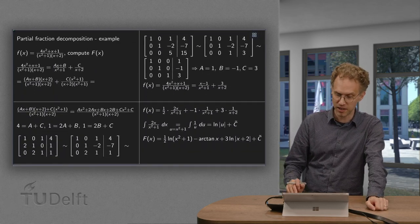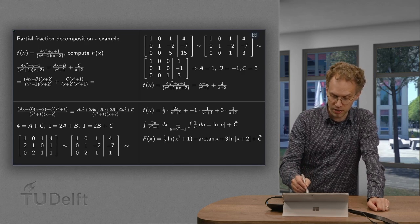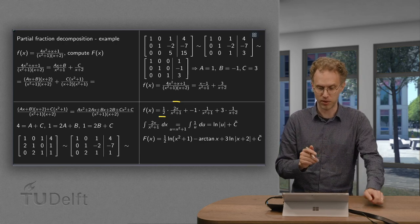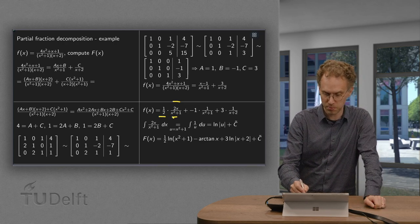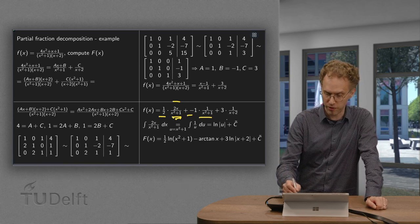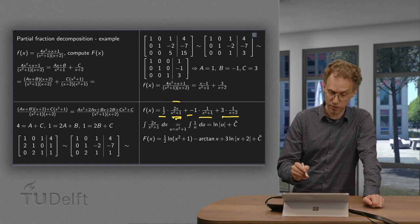So we have to be a bit careful with the x minus 1. The x minus 1 equals 2x times 1 half divided by x squared plus 1. Because now we can integrate this part easily. Minus 1 times 1 over x squared plus 1 plus 3 times 1 over x plus 2.